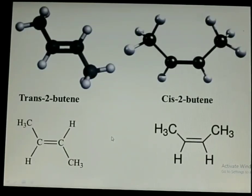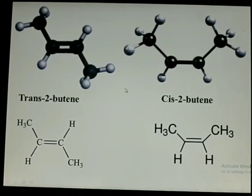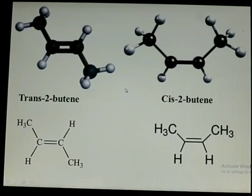We normally represent these molecules on paper as trans-2-butene and cis-2-butene, and these representations give the three-dimensional stereochemical representation of each. So, to introduce stereochemistry: stereochemistry is nothing but the arrangement of atoms or groups in a molecule — the spatial arrangements. How the atoms or groups in a molecule are arranged in space — that is what we call stereochemistry.